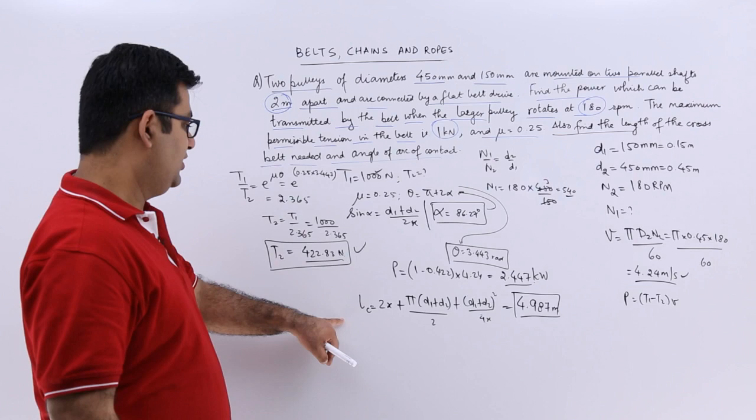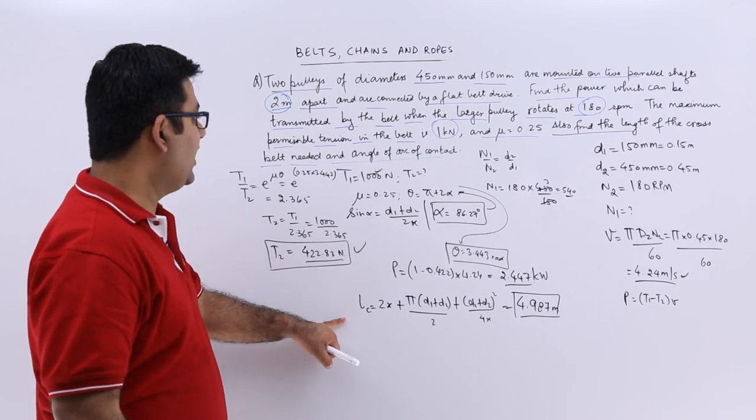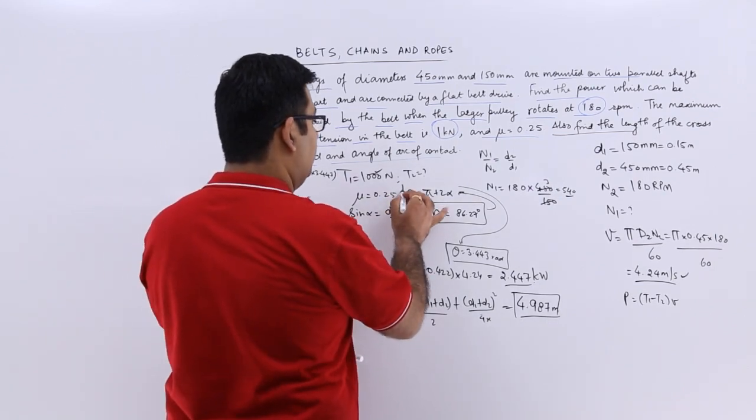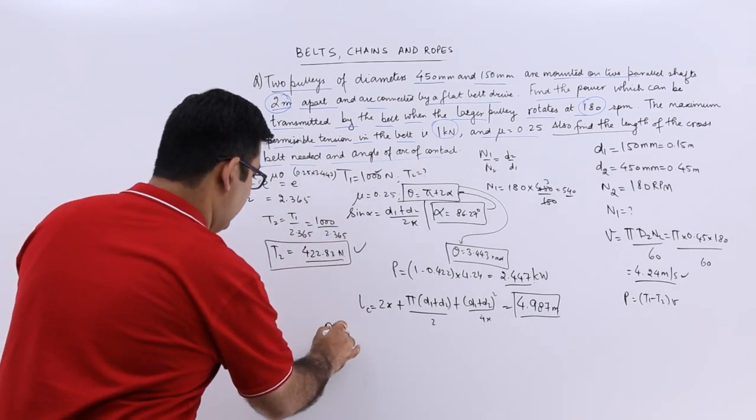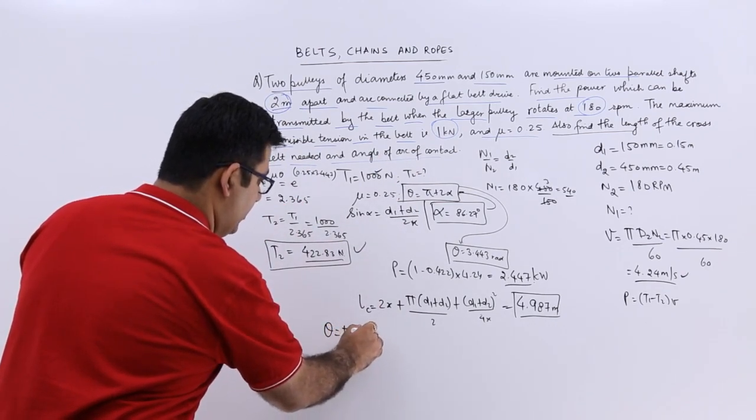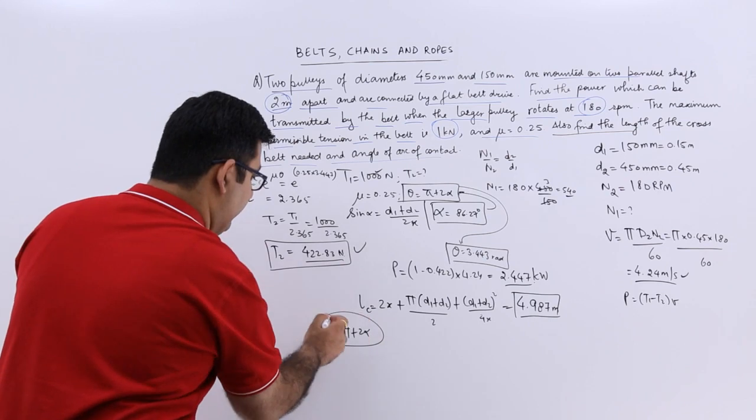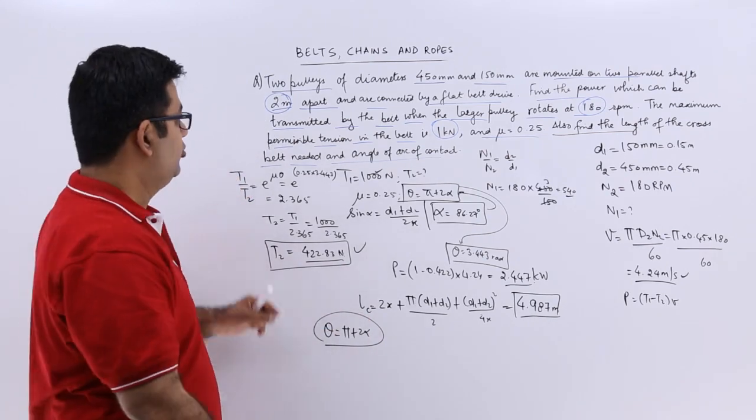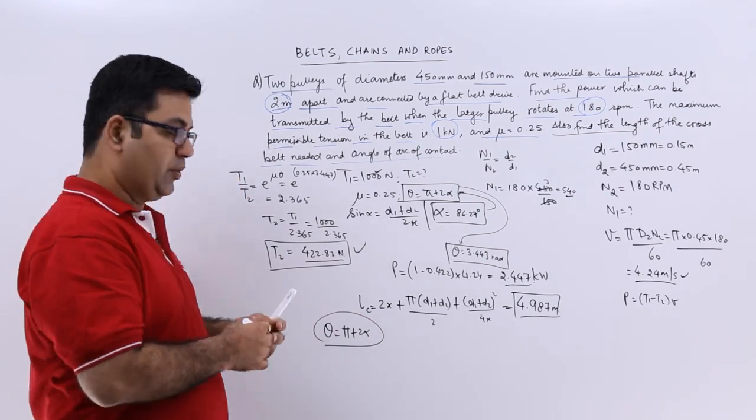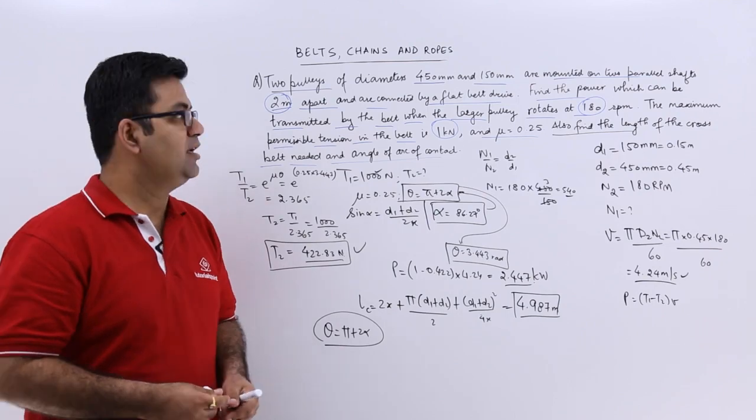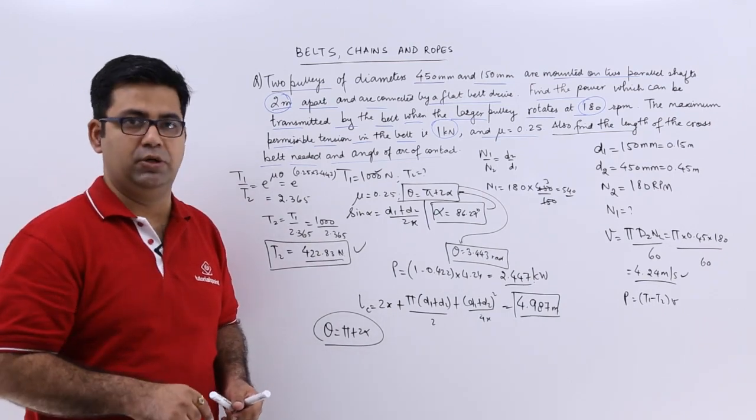So this is the length of the cross belt required and the angle of arc of contact is theta. So theta is already there which is pi plus 2 alpha. Put in the values and you will get your value of theta. So I hope you got this basic question on the topic of belts. Now let us look at one more question on the same topic.